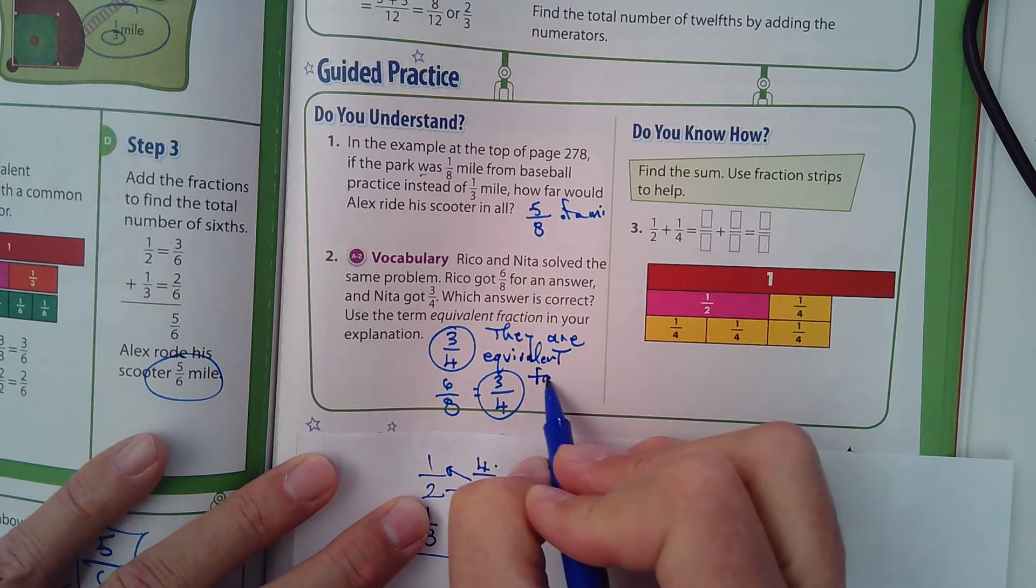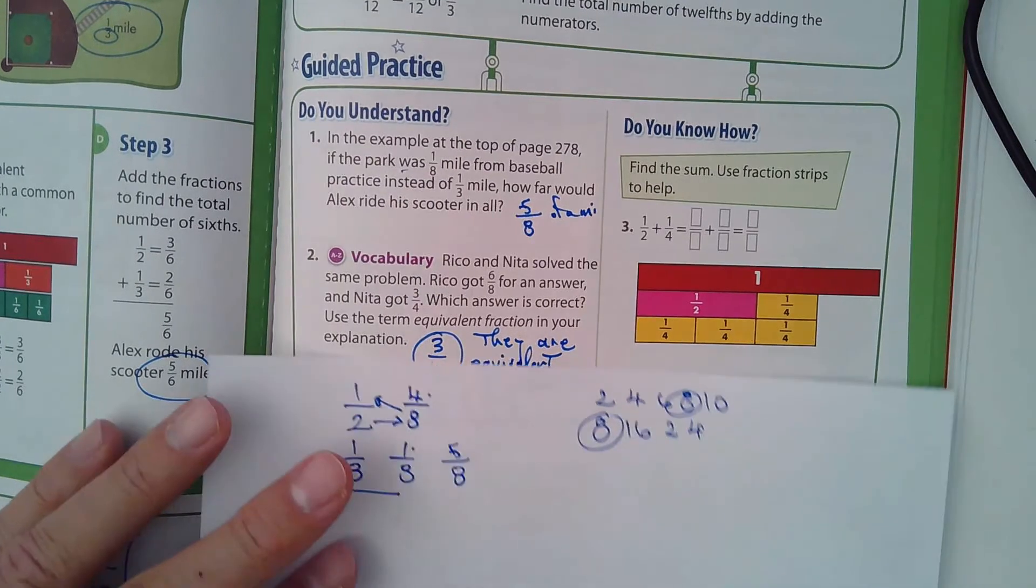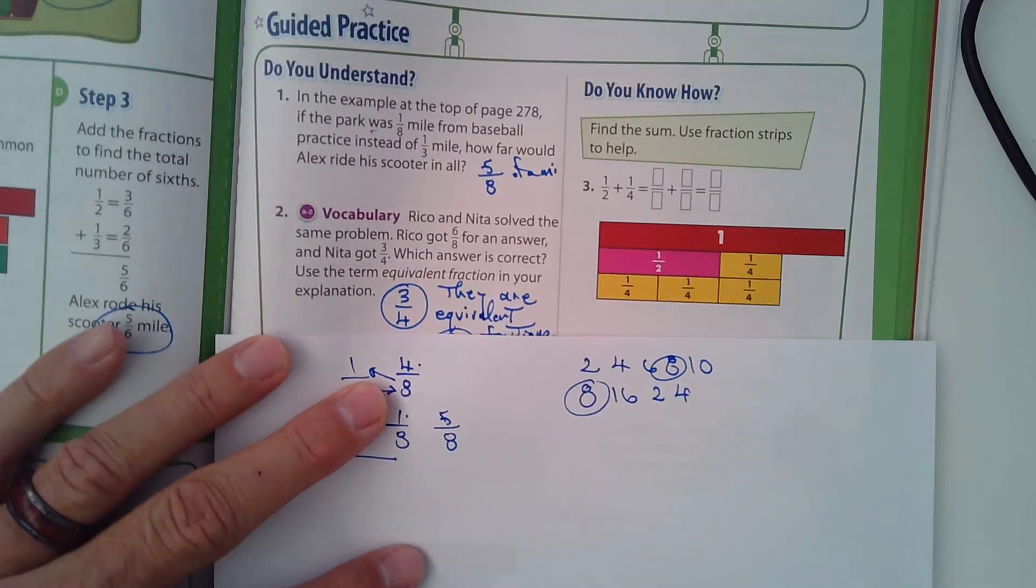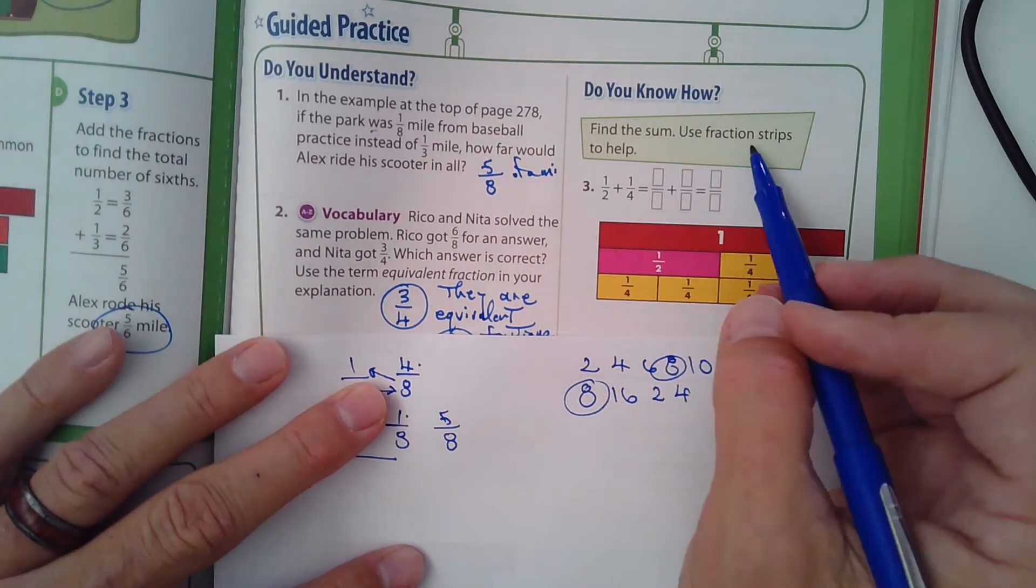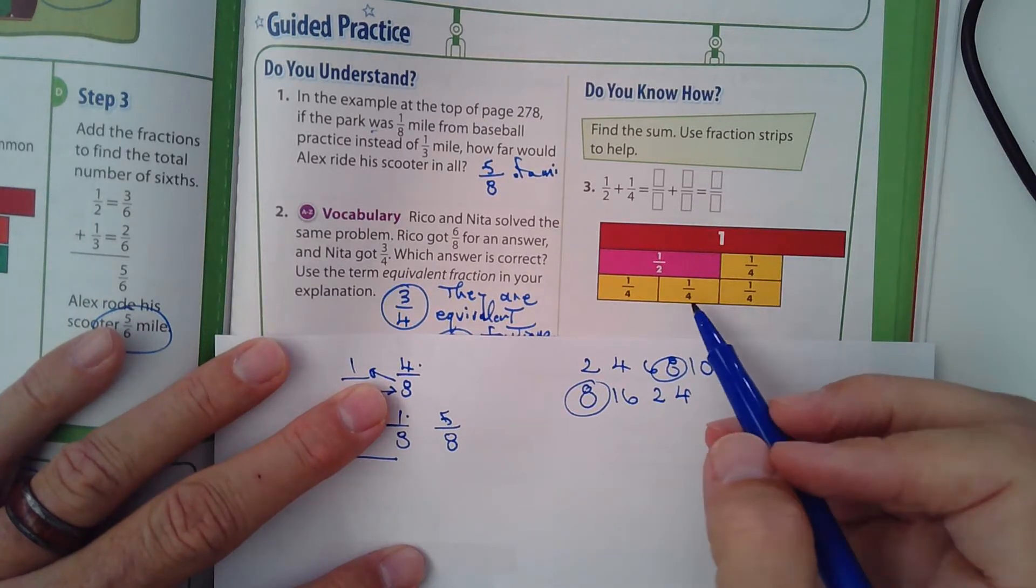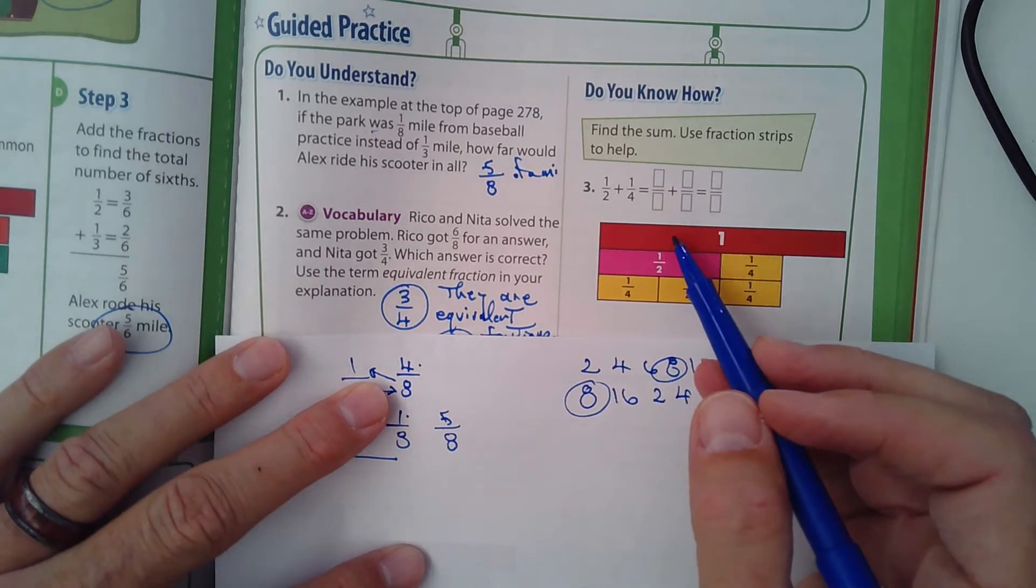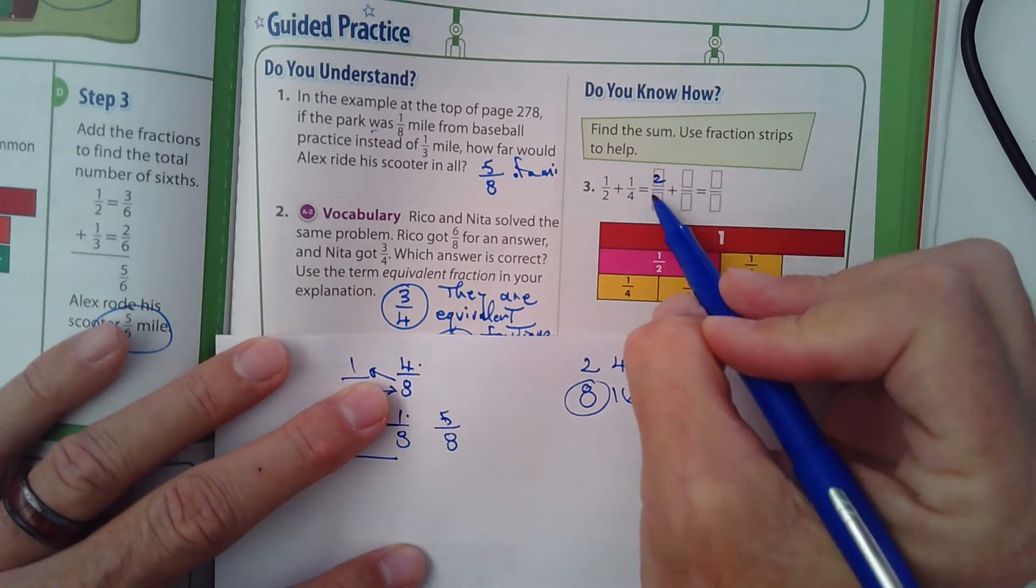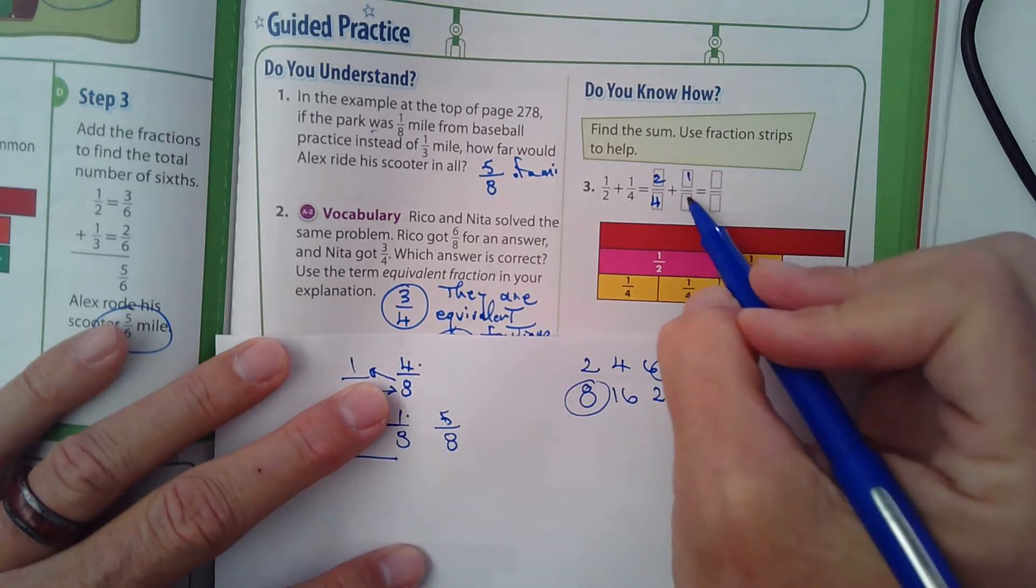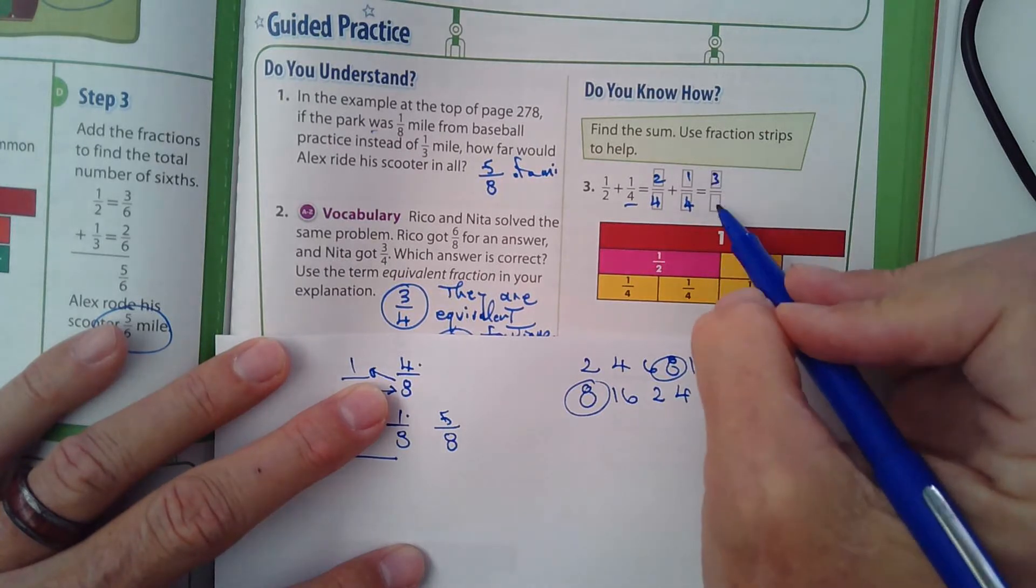Number 3 here says find the sum, use fraction strips to help. This would be 2/4 plus 1/4. They use the fours as the common denominator, which makes sense. What do you end up with? 3/4.